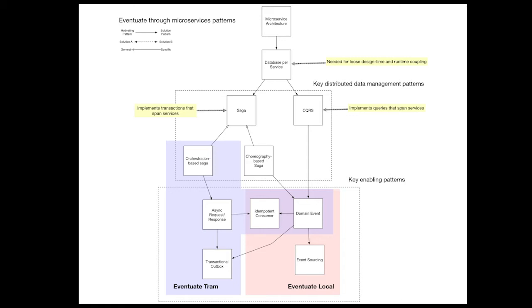Eventuate provides transactional messaging for applications that use traditional persistence. You can write producers that use Eventuate to send messages using the transactional outbox pattern. You can also write idempotent consumers. Eventuate makes it straightforward to develop services that publish and consume domain events, implementing patterns such as CQRS and choreography-based sagas. Services that use traditional persistence can call an event publishing API that is implemented under the covers using the transactional outbox pattern. Alternatively, Eventuate gives you the option of using event sourcing if you want to adopt a fully event-centric approach.